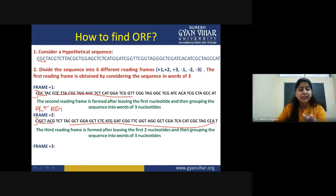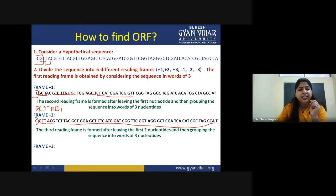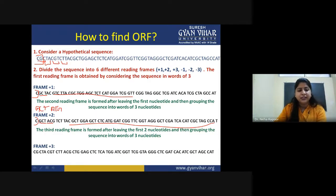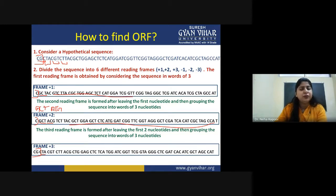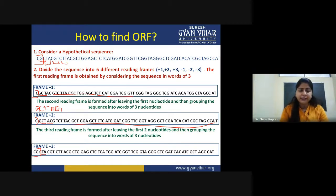For the third reading frame, the first two nucleotides must be left out and you start with the third nucleotide. The reading frame will be CTA, CGT, CTT, and so on. As you can see, the two nucleotides are left and the reading frame starts from that third position. Up to this point we have designed three forward reading frames.